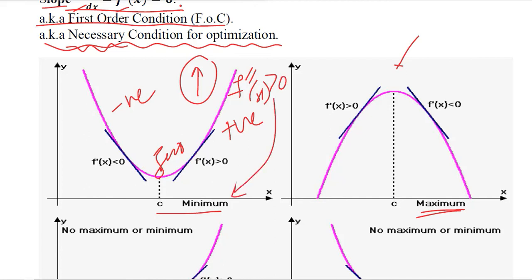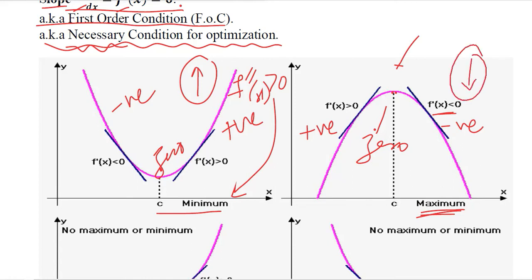Now if I consider the maximum situation: before the maximum point the slope is positive, then it becomes zero, then it turns negative. So the slope is on the whole declining — in other words, the second order derivative is less than zero at a maximum. We have now developed both the first order condition and the second order condition.